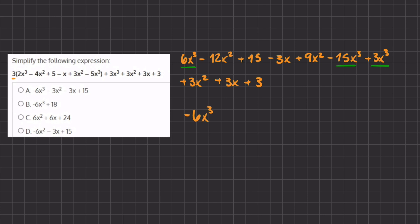And now let's underline all of the x squareds, so we have negative 12x², we have a positive 9x², and we have a 3x². And these actually all cancel out, and we are left with 0x².